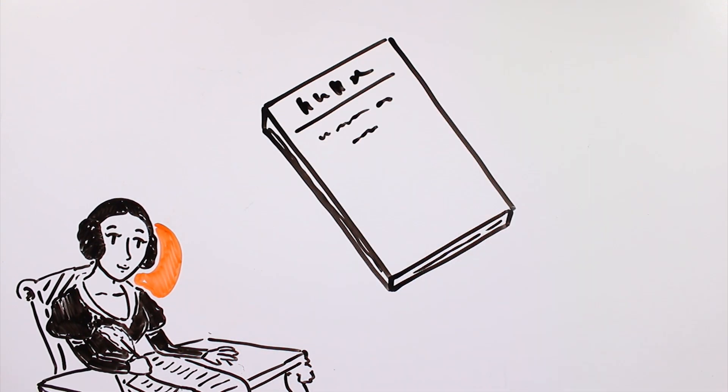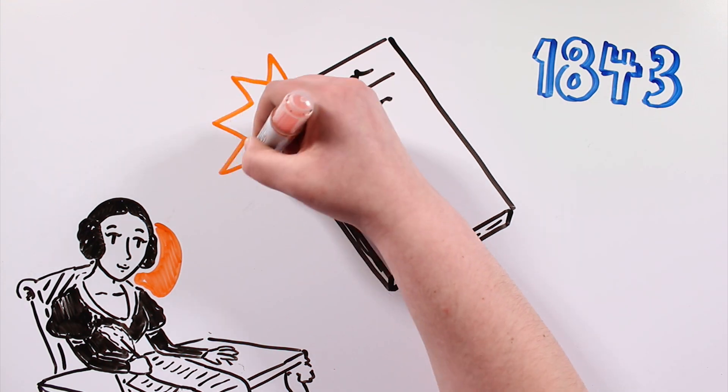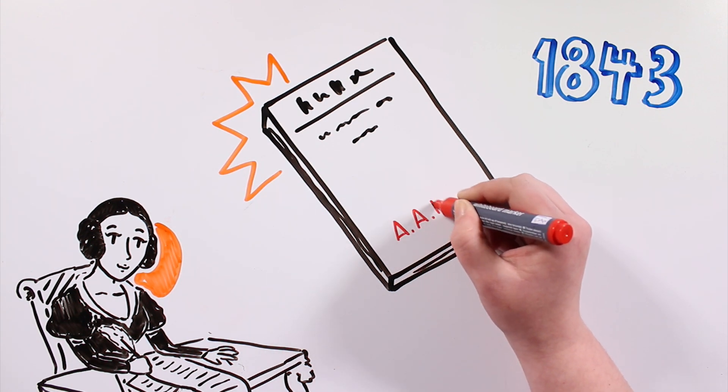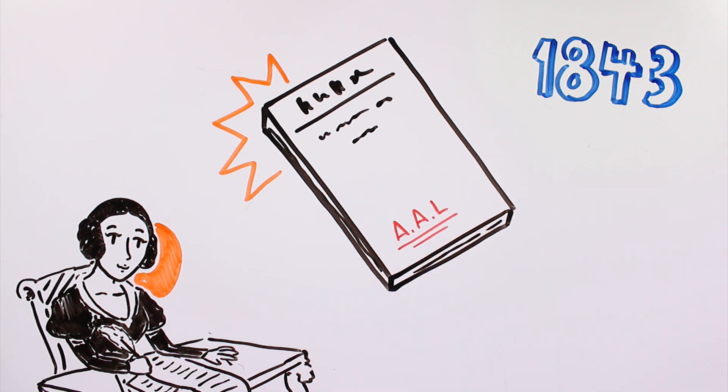Her work was published in 1843 in an inclusive scientific journal. Ada signed with her initials to avoid the censorship of the time. But still, her work was relegated to the background until years later.